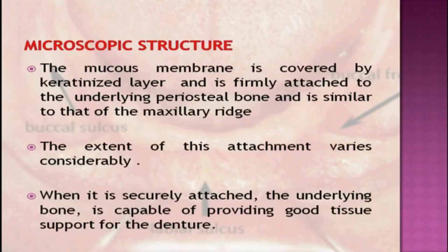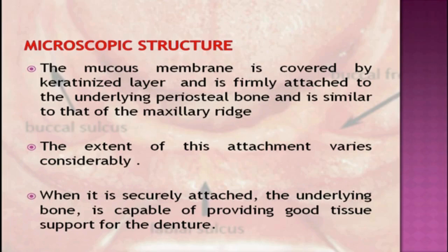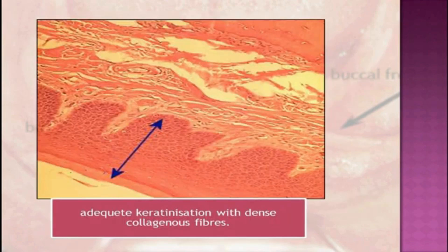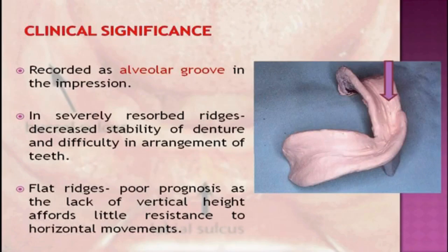Coming to microscopic structures, the mucous membrane is covered by a keratinized layer and is firmly attached to the underlying periosteal bone, similar to that of the maxillary ridge. The extent of this attachment varies considerably. When securely attached to the underlying bone, it is capable of providing good tissue support for the denture — adequate keratinization with dense collagenous fibers is shown in the figure. Clinically, it is recorded as an alveolar groove in the impression.